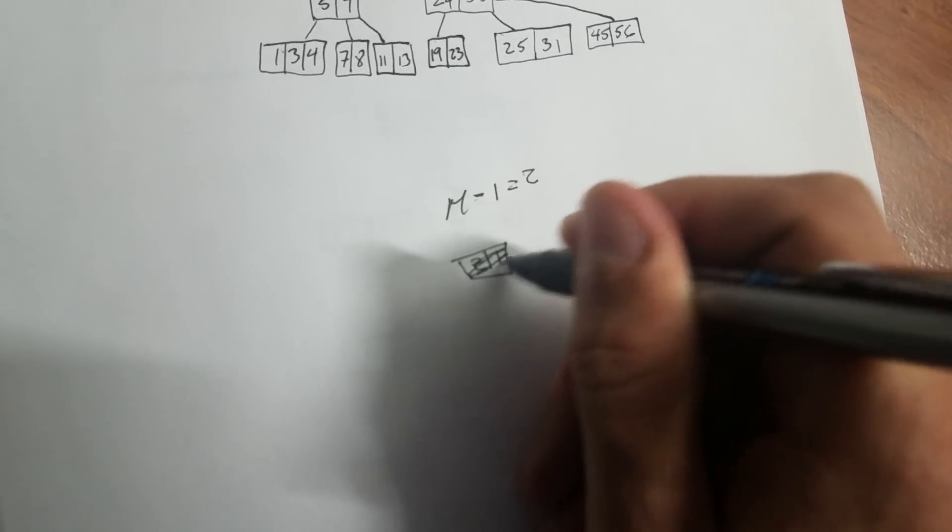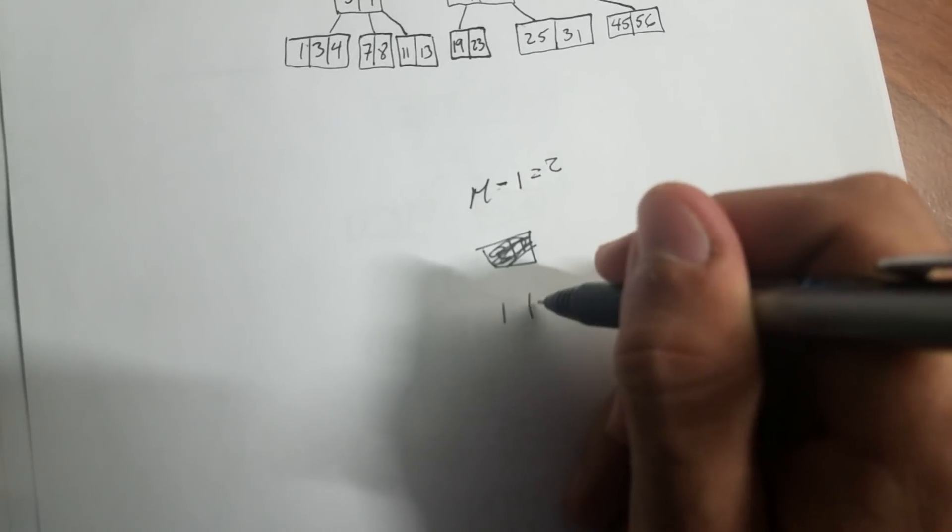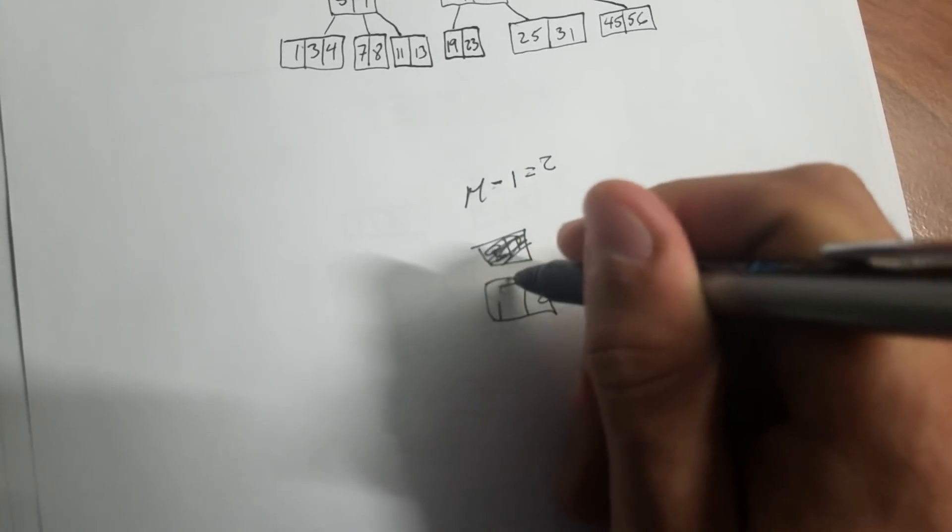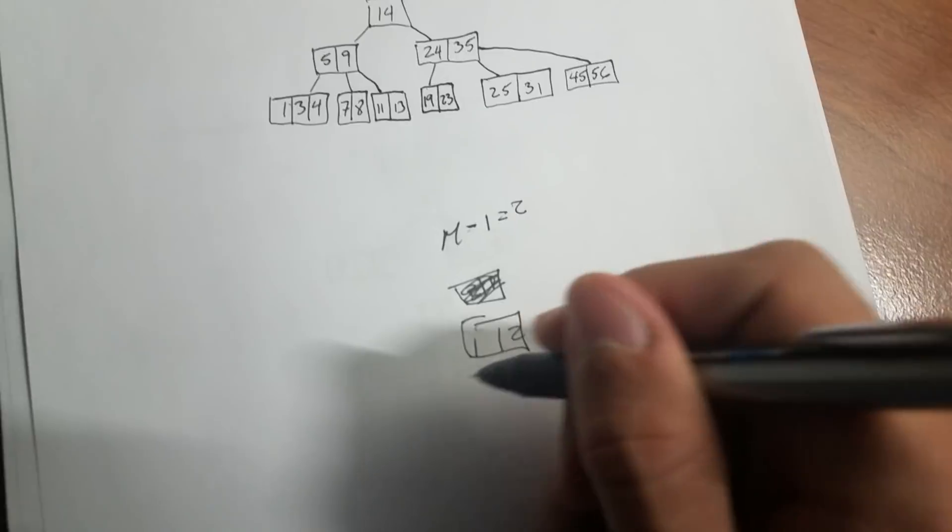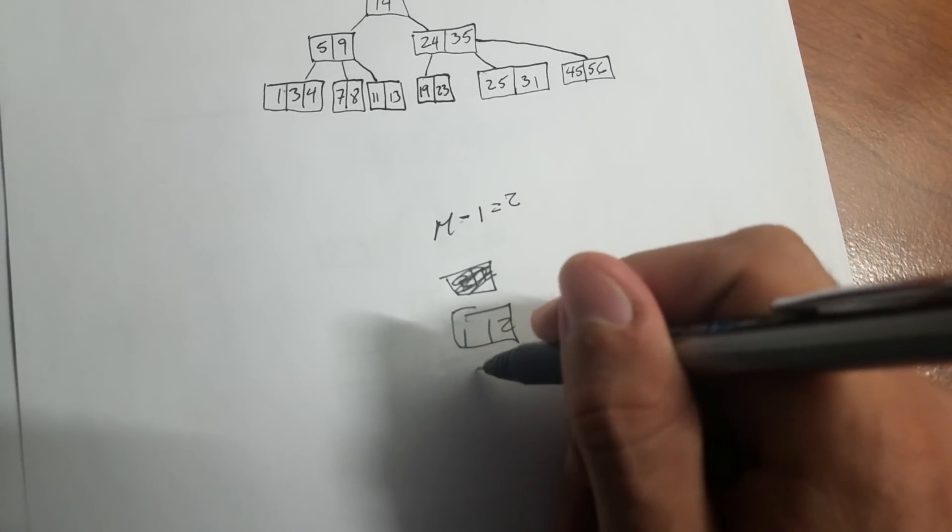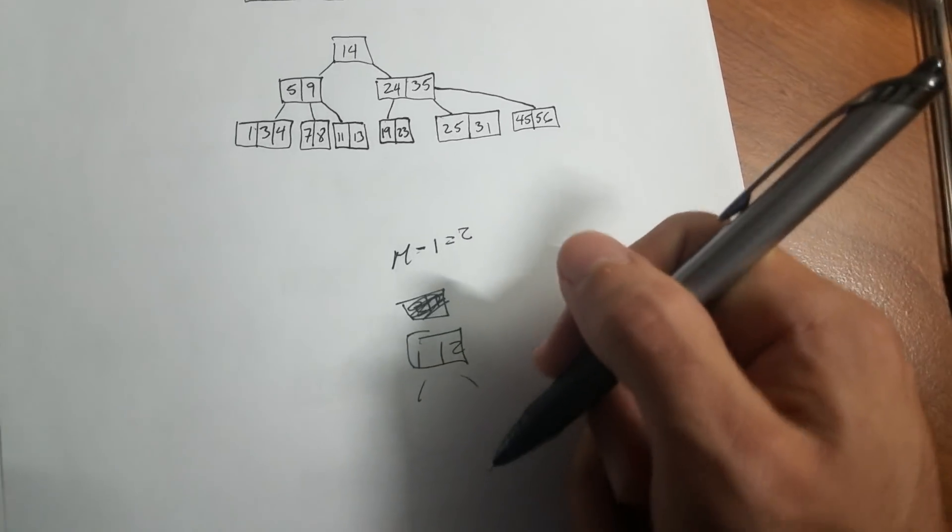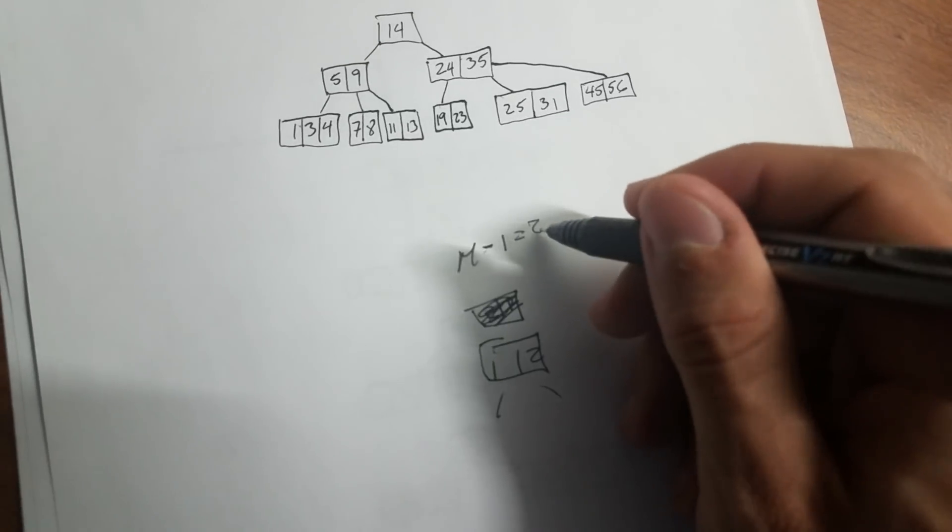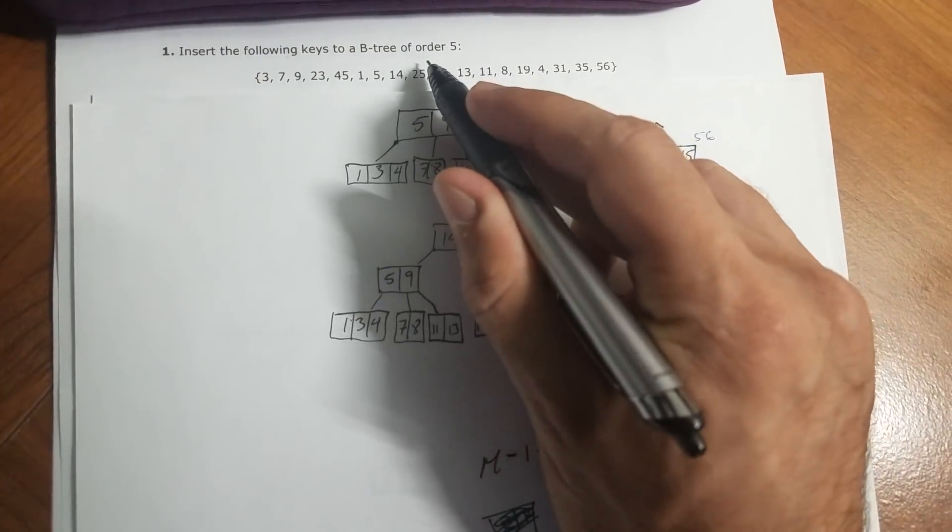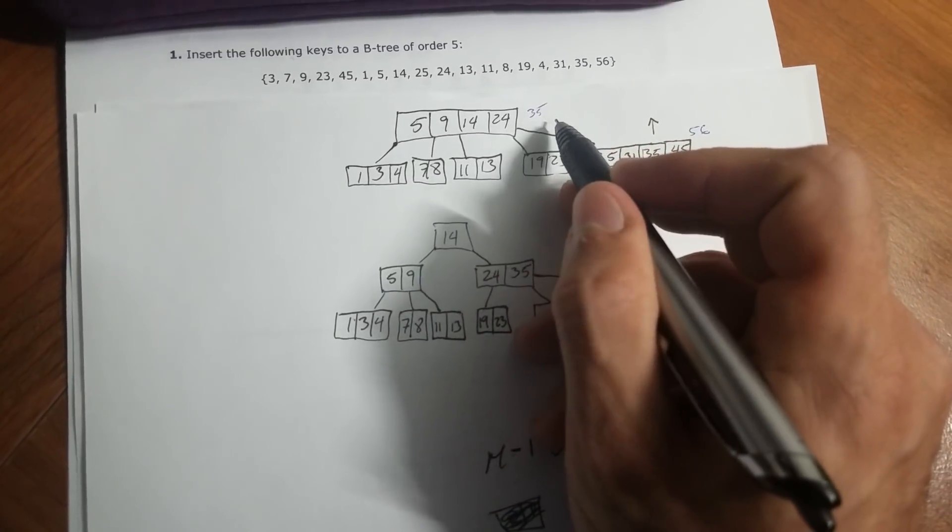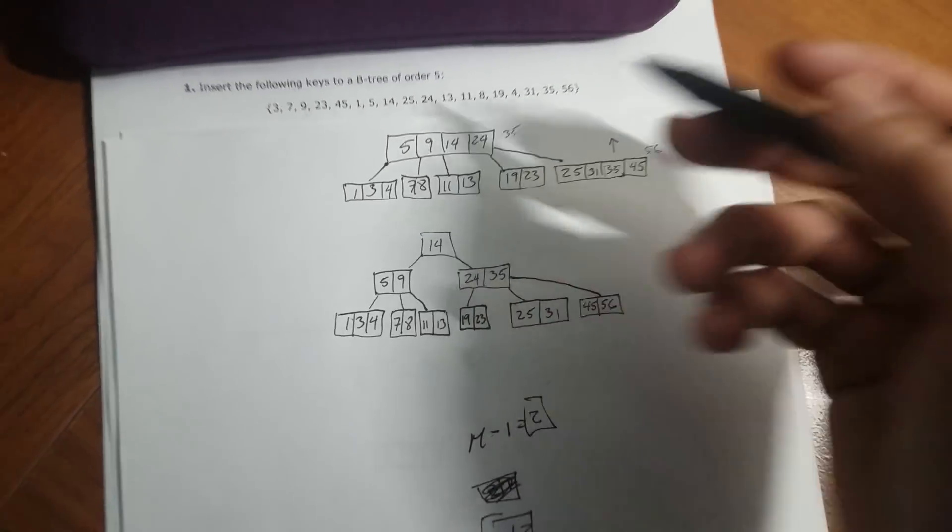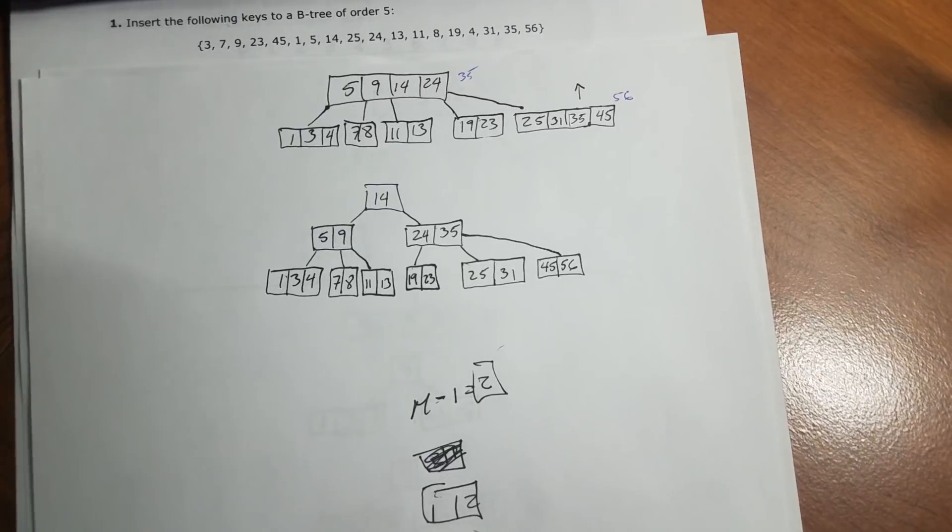Oh, my bad. I'm sorry. It has to be sorted. So one and two, you can only have two elements here. Then if you want to add another one, you would have to split because you can only have two, if you had order two. In this case, we had order five. So m minus 1 equals four. So we have four elements there. If you have any questions, let me know.